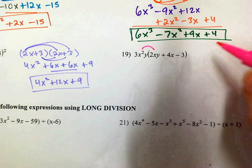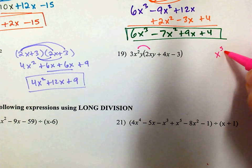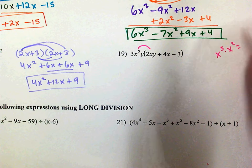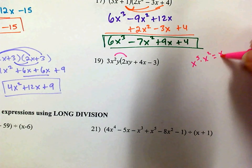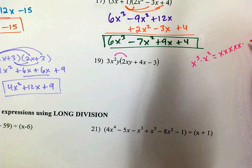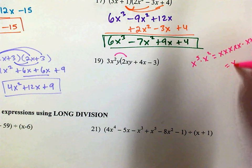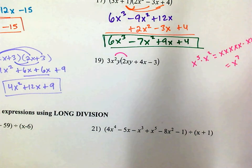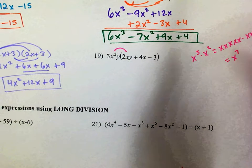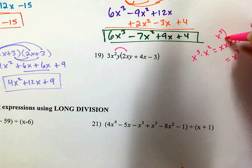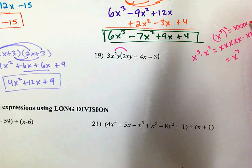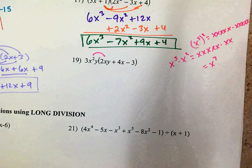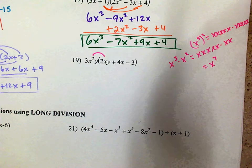When you multiply two terms like x to the 5th times x to the 2nd, you actually add the powers — because you're saying 5 x's times another 2 x's gives x to the 7th. If you have x to the 5th to the 2nd, that's 5 x's times another 5 x's, which is x to the 10th. That's when you multiply when you raise a power to another power.